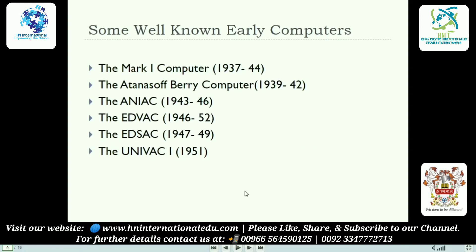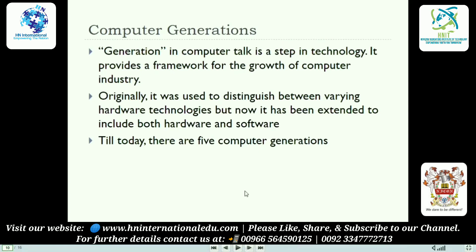Some well-known early computers: the Mark I computer from 1937 to 1944, then the Berry computers, ENIAC, EDVAC, and UNIVAC. Then come the computer generations — the computer has been revolutionized according to generations: generation one, two, and so on. A generation in computer talk is a step in technology; it provides the framework for growth of the computer industry. There are five computer generations till now.